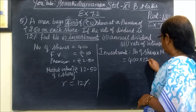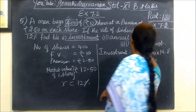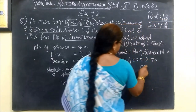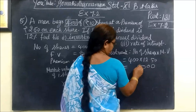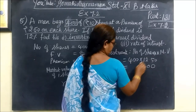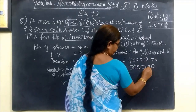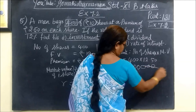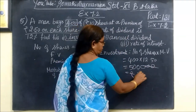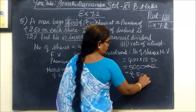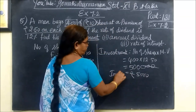The total investment is calculated as number of shares multiplied by market value. Number of shares is 400 and market value is Rs.12.50, so the total investment is Rs.5,000.